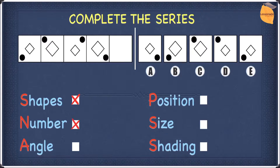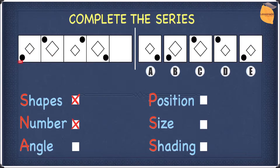In terms of angle, there is no rotation. This diamond has not been rotated to become the next diamond, and this circle has not been rotated to become the next circle. Since nothing has been rotated, angle doesn't work either.